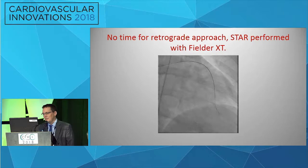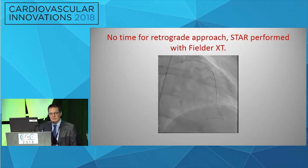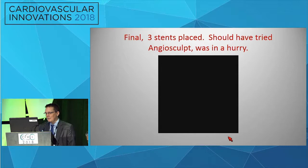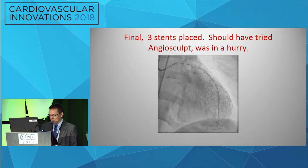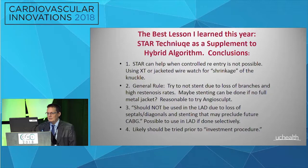Here comes a STAR on purpose. We have a Corsair, we have a Fielder XT. You can see a big knuckled wire, and you can see it shrink. The location is important — this is a tortuous part of the LAD, and you're taking a fairly stiff wire. I remember getting yelled at from the last time and tried not to stent, but really I had no flow anywhere. We ended up with not a perfect, but a pretty good result. We had the right open, we had the CERC open, and she did well.